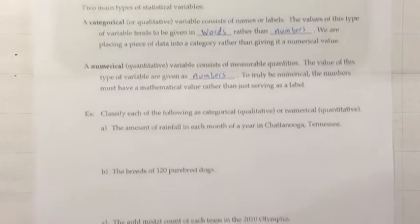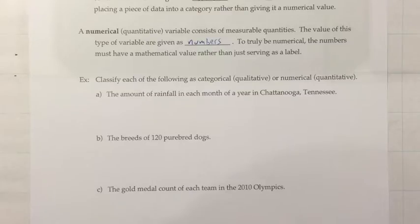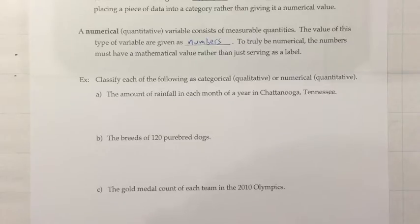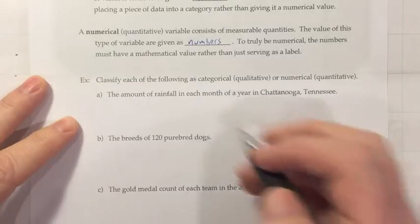Let's go ahead and classify each of the following as categorical or numerical. The amount of rainfall in each month of a year in Chattanooga, Tennessee — thinking about what a piece of data might look like, something like 13.7 inches, we're giving a number, so that would be numerical.